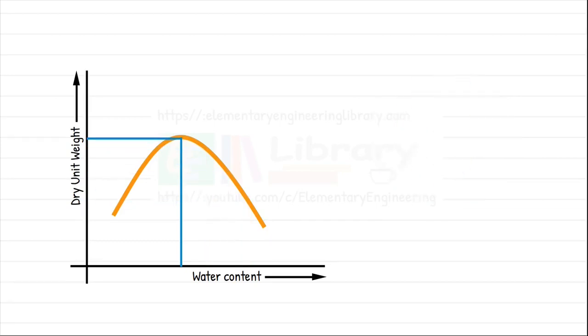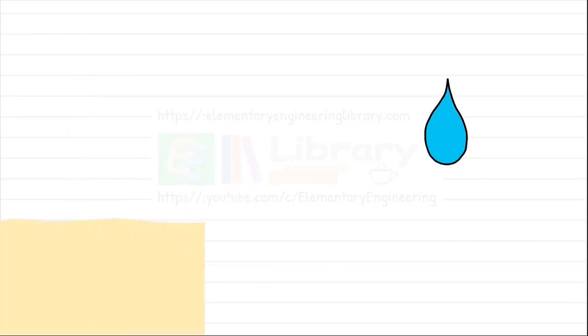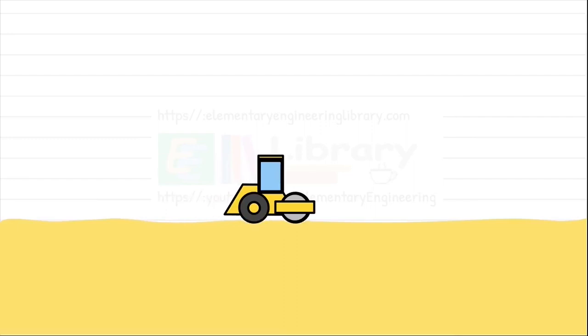Because now water begins to occupy the space that otherwise might have been occupied by the soil particles. With the curve we try to find out the water content at which the soil is most dense and most compacted. Then we add that amount of water in the soil and compact it in the field.